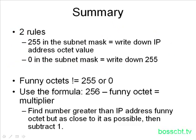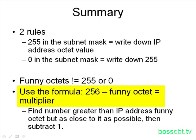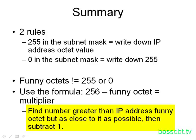To summarize: there are two rules to find the broadcast IP address. If there's a 255 in the subnet mask, write down the corresponding IP address octet value. If there's a zero, write down 255. That works for classful networks or any subnetting with only 255s and zeros. For the harder cases involving a funny octet, use the formula: 256 minus the funny octet value gives the multiplier. Use the multiplier to find the number just greater than the IP address funny octet, subtract 1, and you have your answer.